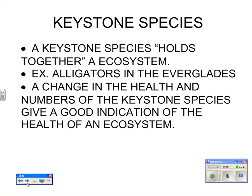A keystone species is a species — such as an alligator — that helps maintain an ecosystem or provides the basis for the ecosystem to exist. Alligators are a great example; they make gator holes and allow species to survive. Anytime an ecosystem is not healthy, usually a keystone species has difficulty surviving and acts as an indicator of whether that ecosystem is stable or declining.